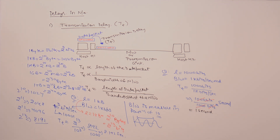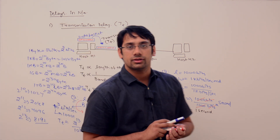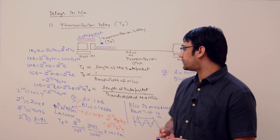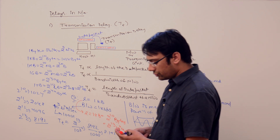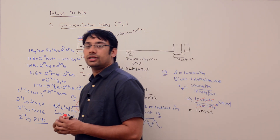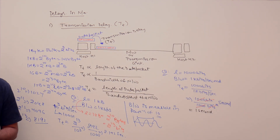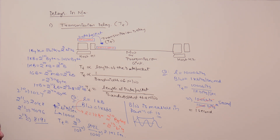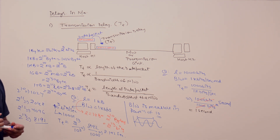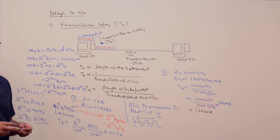Remember: bandwidth is measured in the powers of 10, and data is measured in the powers of 2. This is called transmission time. Now let us discuss about the next type of delay, which is called propagation time.